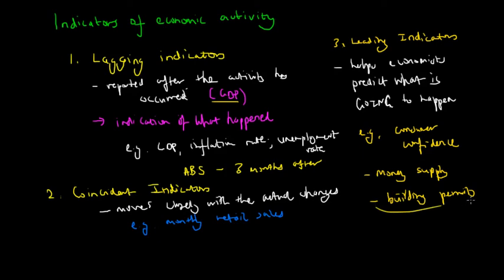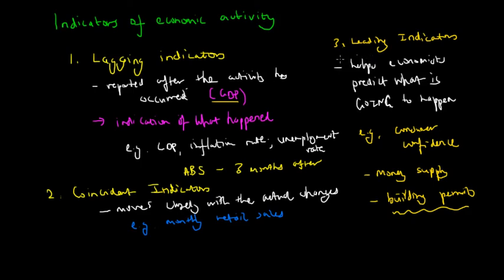Similarly, if building permits increase, that would suggest more builders are going to start constructing houses, apartments, and high-rise towers. This would increase employment, create more jobs, decrease the unemployment rate, and increase overall income levels in the economy. The government can then use budgetary policy to counter-cyclically act against these leading indicators, which may suggest either an increase or decrease in future economic activity.